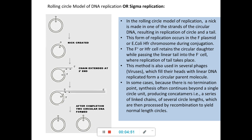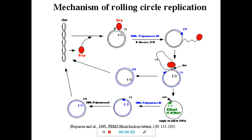The mechanism of rolling circle replication begins when the plasmid can occur as a catenated molecule — entwined with each other — forming a double-stranded supercoiled molecule. When this plasmid needs to be replicated, proteins called Rep A proteins come and bind onto it, producing a nick on the DNA.